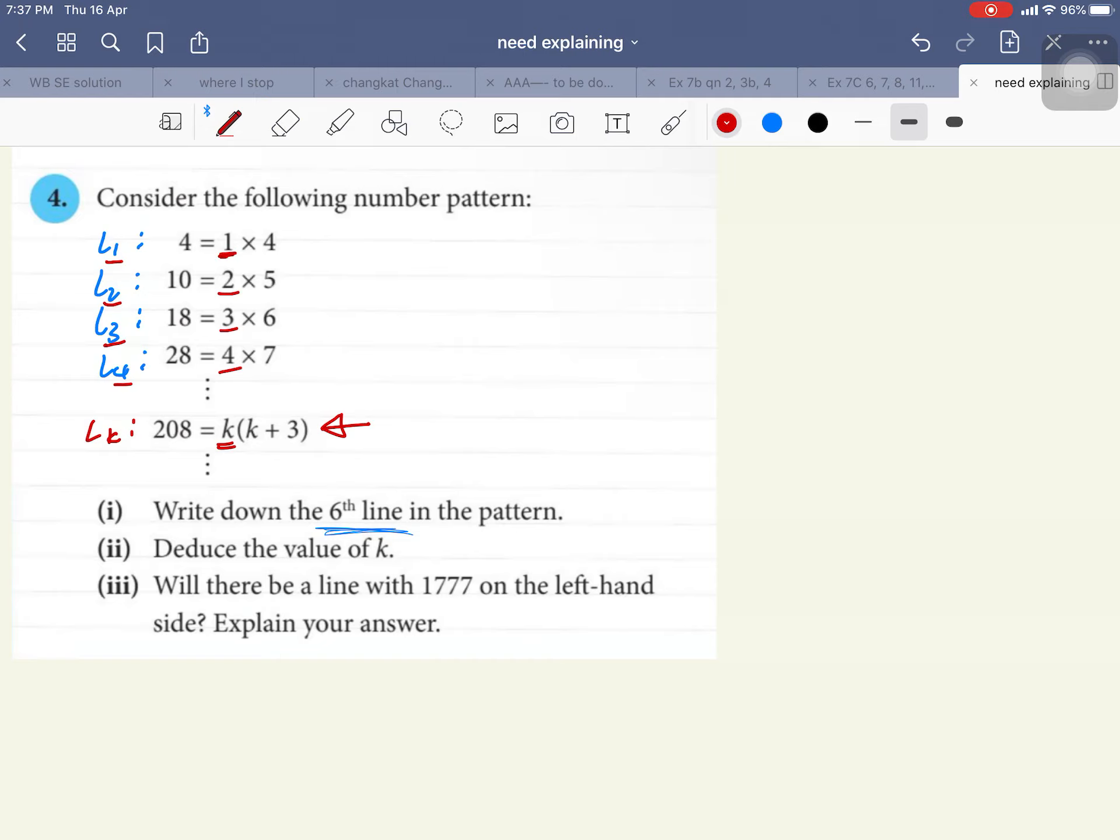Now, you're supposed to write down the 6th line in the pattern. So, I will start with the easiest. So, I know that line 6 will consist of a number equals to something times something. Now, I know that this number and the line number coincides. So, I can say that this number will be 6.